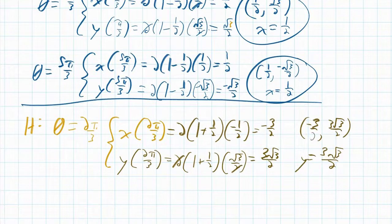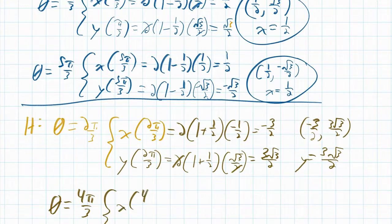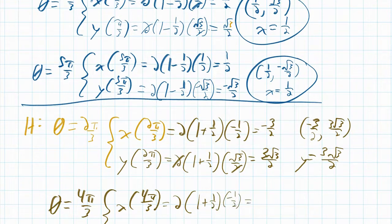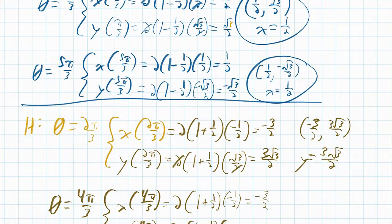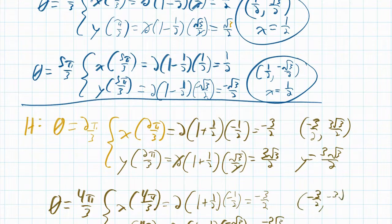At θ = 4π/3: x(4π/3) = 2(1 − (−1/2))(−1/2) = −3/2, which is the same x value. The y value changes sign: y(4π/3) = 2(3/2)(−√3/2) = −3√3/2. So the ordered pair is (−3/2, −3√3/2) with horizontal tangent y = −3√3/2.